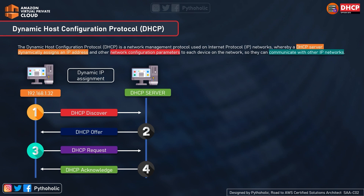In the last step, the DHCP server checks if the requested IP is the same one it had broadcast. If yes, it sends an acknowledgement. So in summary, we have four steps: DHCP Discover, where the host finds available DHCP servers; DHCP Offer from the server; DHCP Request from the host; and DHCP Acknowledgement from the server.